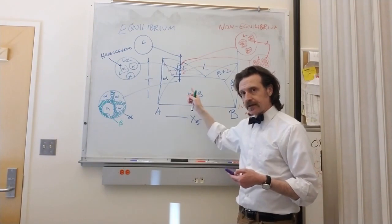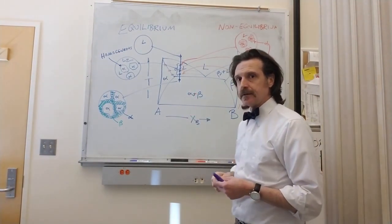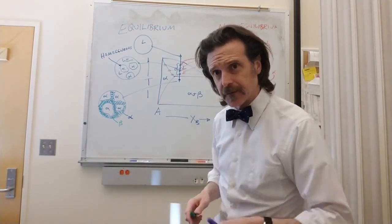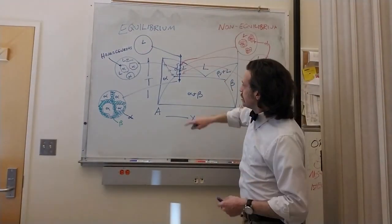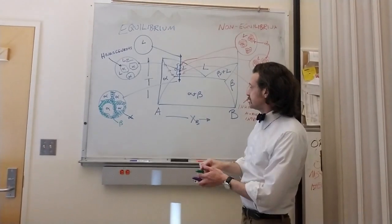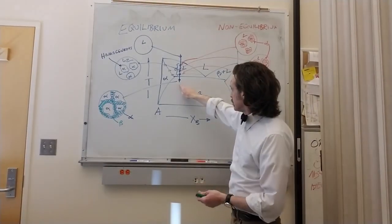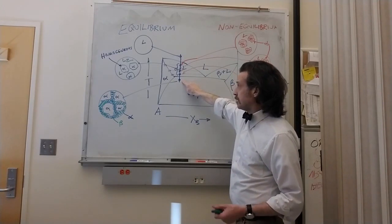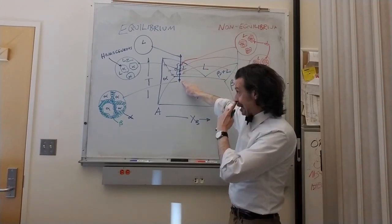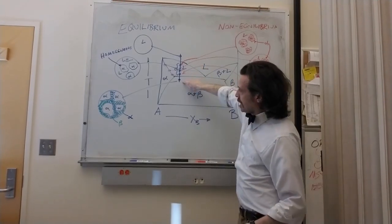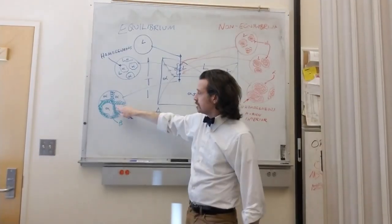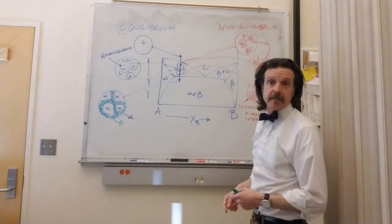These are valid only when there is no consideration of kinetics. For example, if we take this composition and heat it up to liquid, then cool it down, we know that it starts out as liquid and ends up as alpha crystals surrounded in a eutectic microstructure.